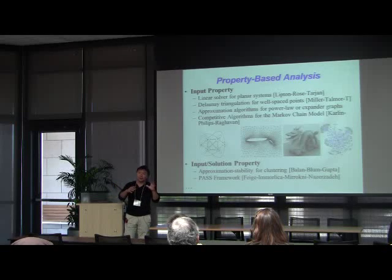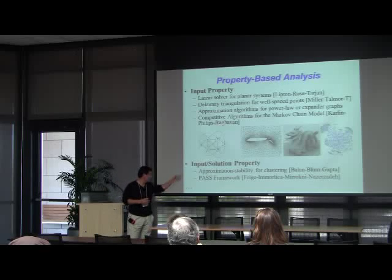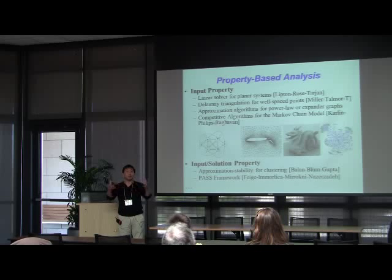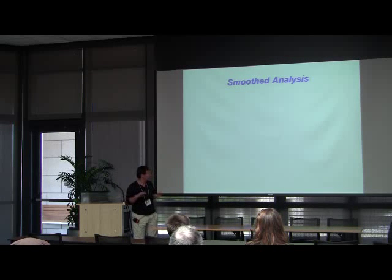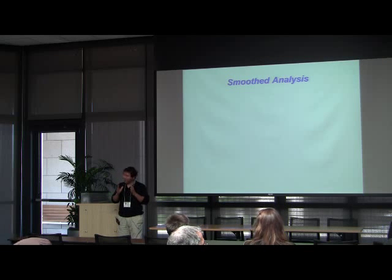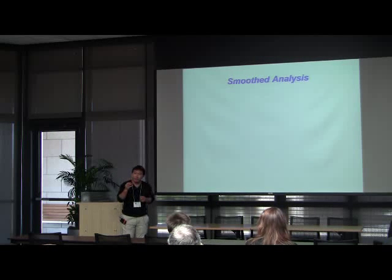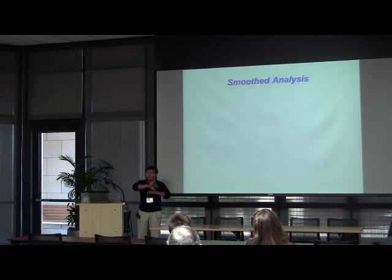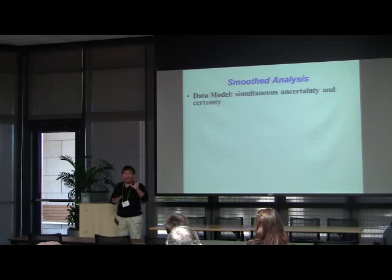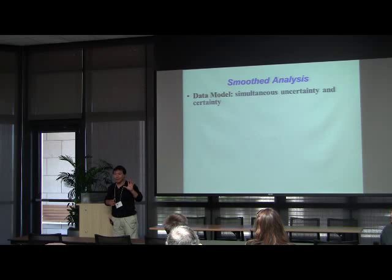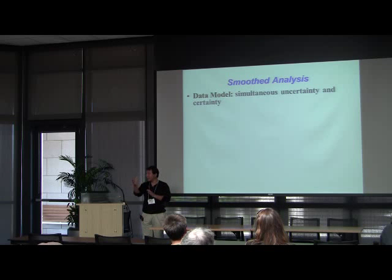For example, our first talk by Arun showed that if the output has certain properties, you can compute it faster. Back to smooth analysis: in smooth analysis, we also in many ways combine this notion, either explicitly or implicitly, of property-based analysis. We happen to use one particular property — what I'd like to give at least a quick intuition about — because Dan already presented our framework. We began to look at data models and fundamentally tried to apply this thing called the simultaneous certainty and uncertainty property, or what we call the imprecision property.